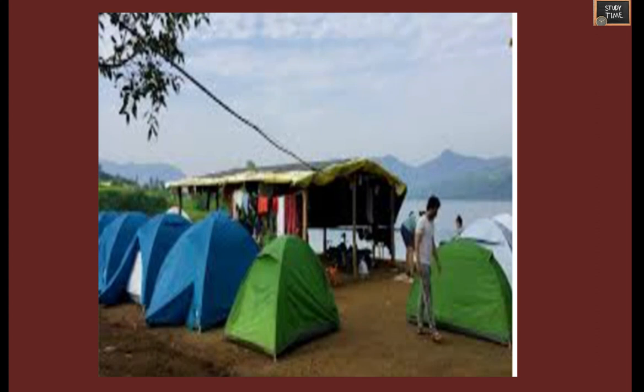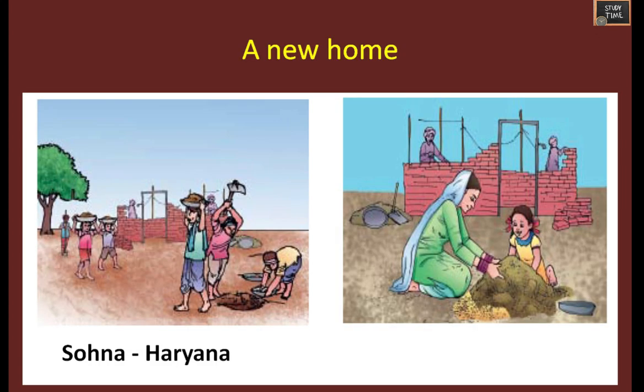After a few days, his father told them they had been given land in Sohana village in Haryana. Everyone was happy and they all planned to build a new house. His father and mother worked hard and children also helped. His mother bought cow dung from nearby houses, mixed it with mud, and coated the floor to keep insects away.